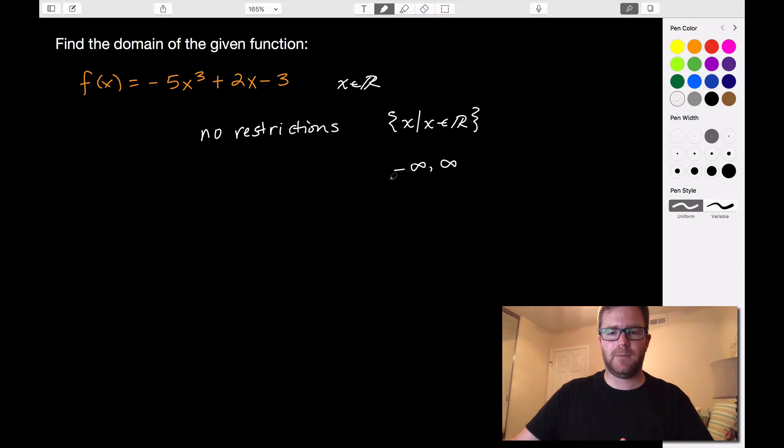Now if you remember back to when we were talking about interval notation, any time we meet an infinity we always use parentheses, because we cannot include them in our set. We never actually reach those values, so we can't include them.